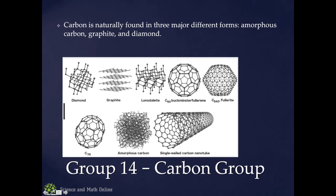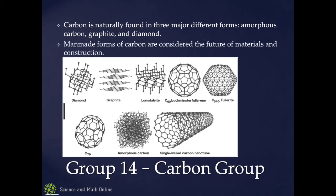A lot of other allotropes are man-made: Buckminster Fullerene, Fullerite, Carbon Nanotubes. Carbon Nanotubes are stronger than steel, yet they are just atoms — incredibly thin, way thinner than a strand of hair, but stronger than a steel wire. These are really revolutionizing how we do things. Buckminster Fullerene and Fullerite also make amazing lubricants and make things move and flow smoothly because they're small balls that roll over each other really easily. They're revolutionizing the future of materials and construction.